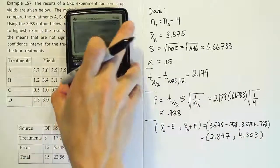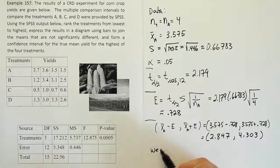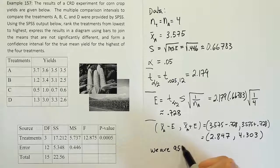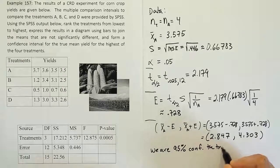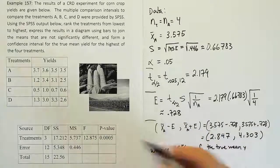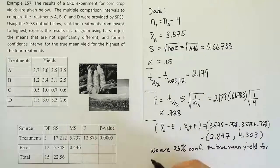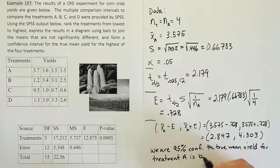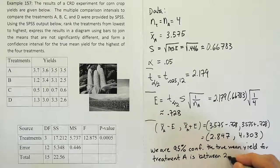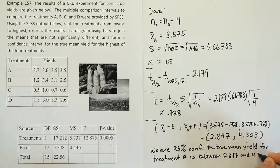Okay, so that's our solution. And so what are we saying here? We're 95% confident that we are 95% confident the true mean yield, because this is a yield that we're talking about, a corn yield. Yield for treatment A is between 2.847 and 4.303.